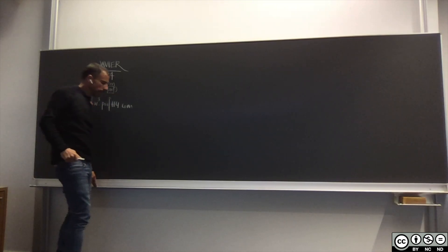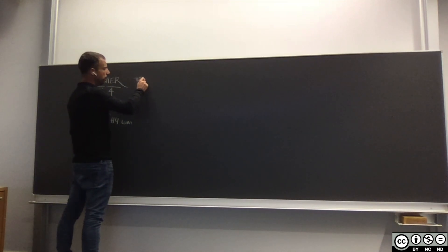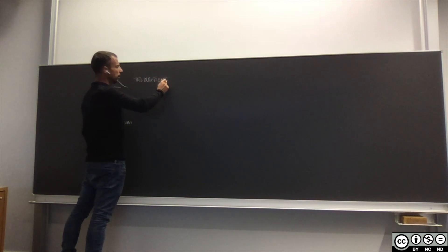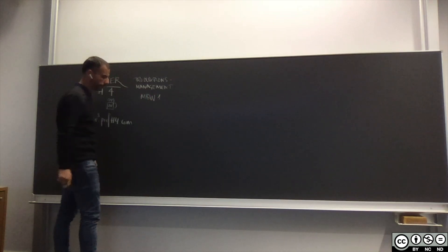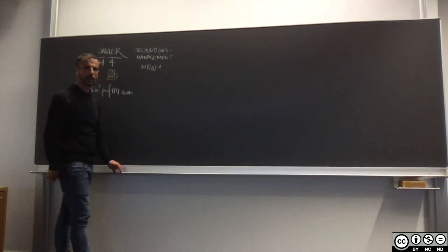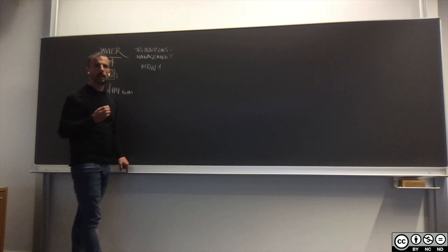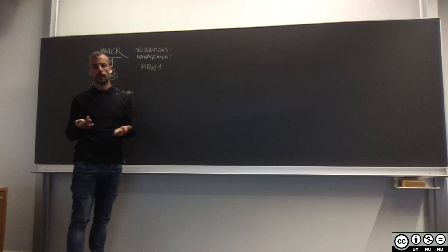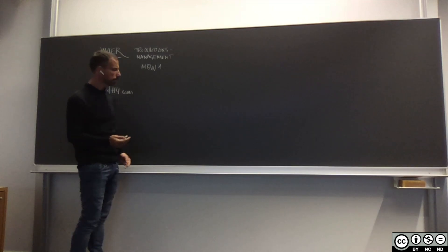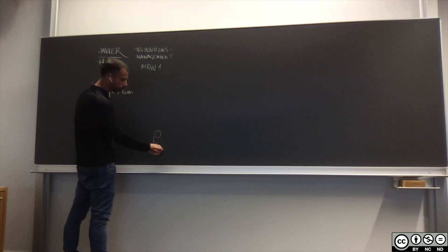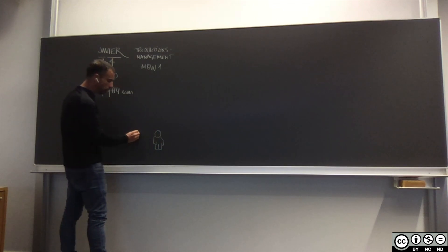So, we're talking about production management. We are here describing organizations, and this is important because it provides the framework for the entire lecture. We start with the individual. The first level is the person in an organization.